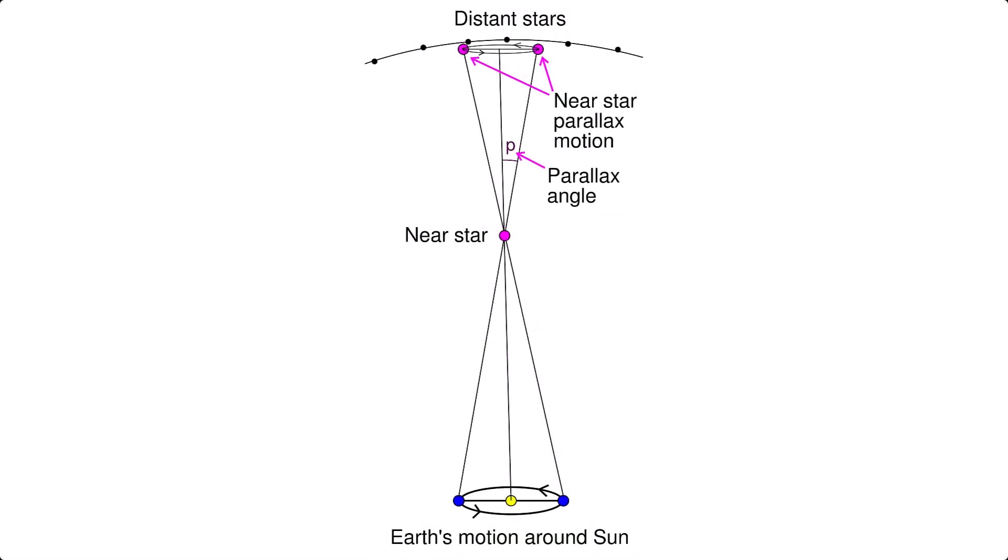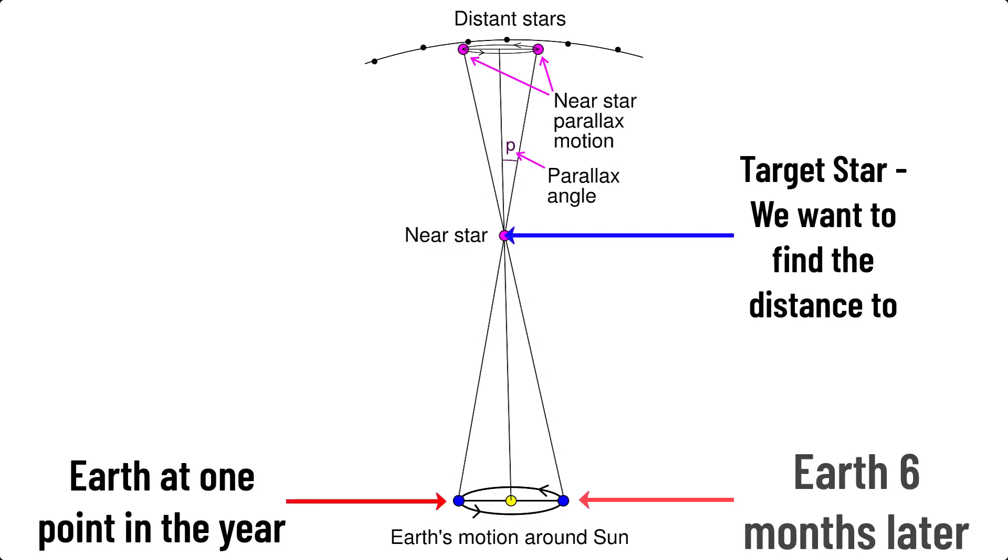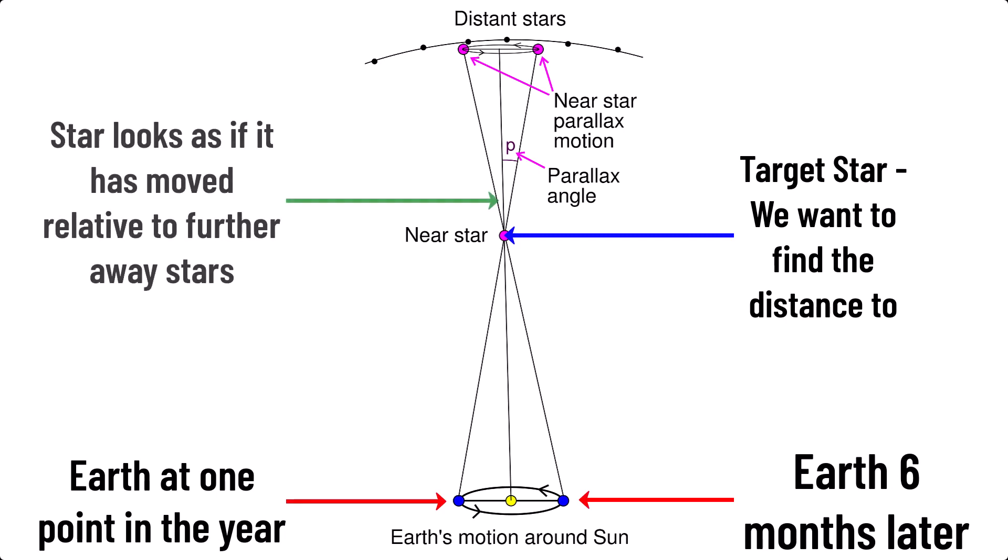Astronomers use this to work out distances to the stars. This is done by observing the target star with your telescope at one point in the year and then again six months later. The star will appear to have shifted with respect to the much further away background stars. The target star would be your thumb, the background stars would be the background behind your thumb, and the distance between the Earth at one point in the year and its position six months later would be the space between your eyes.